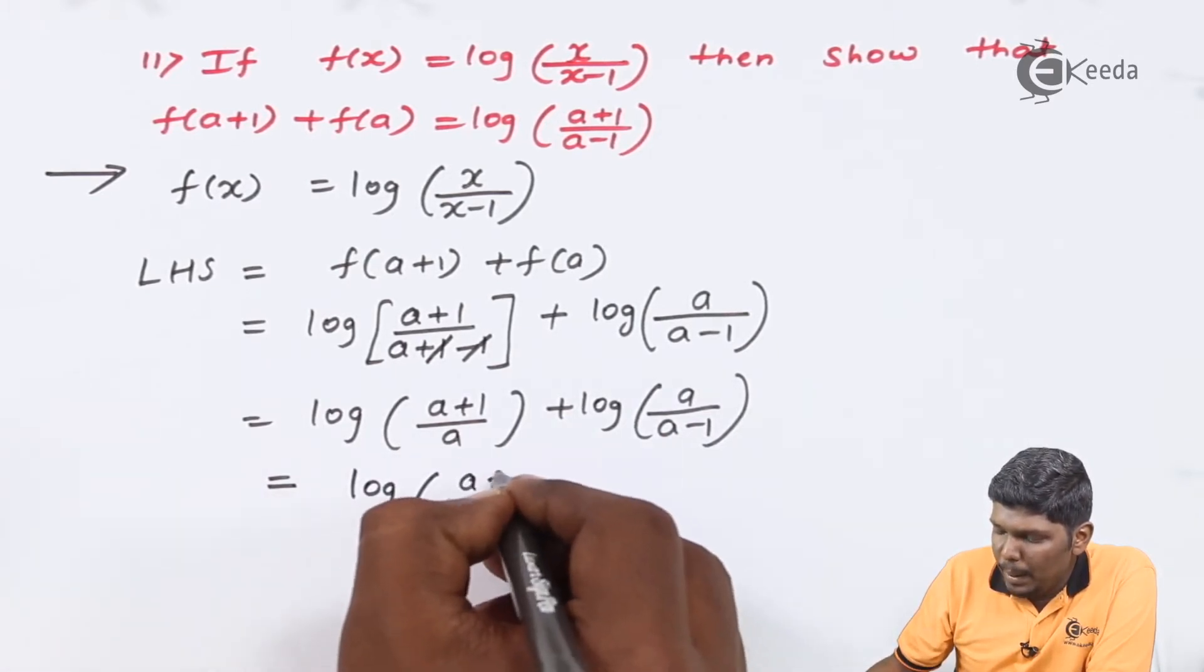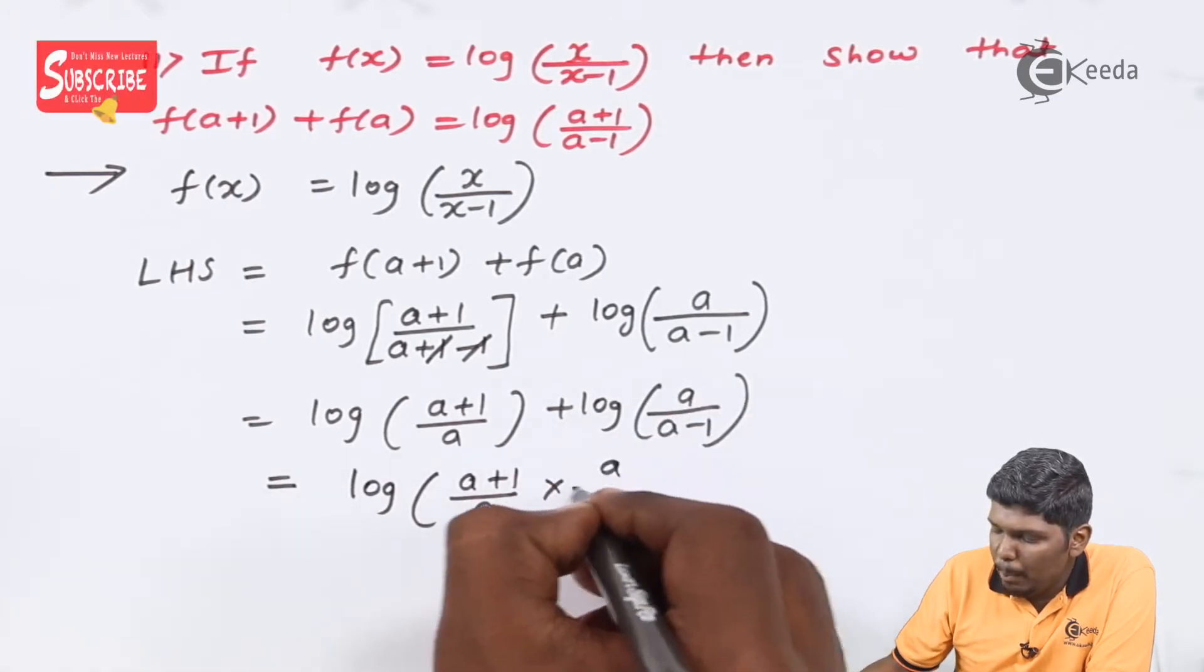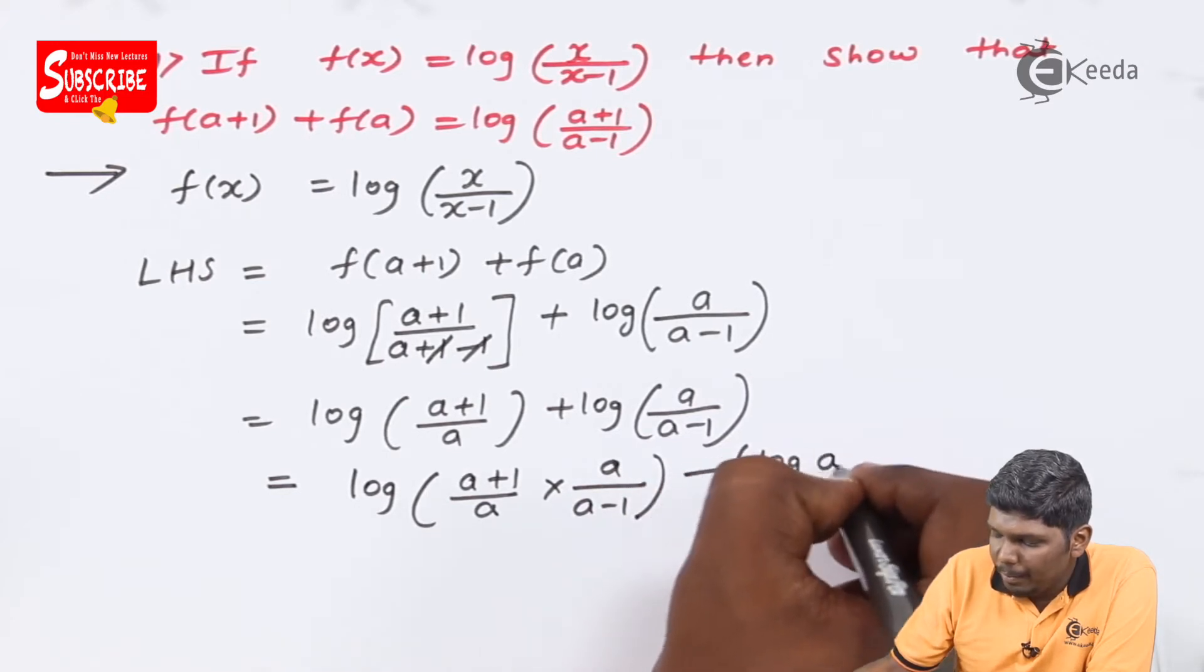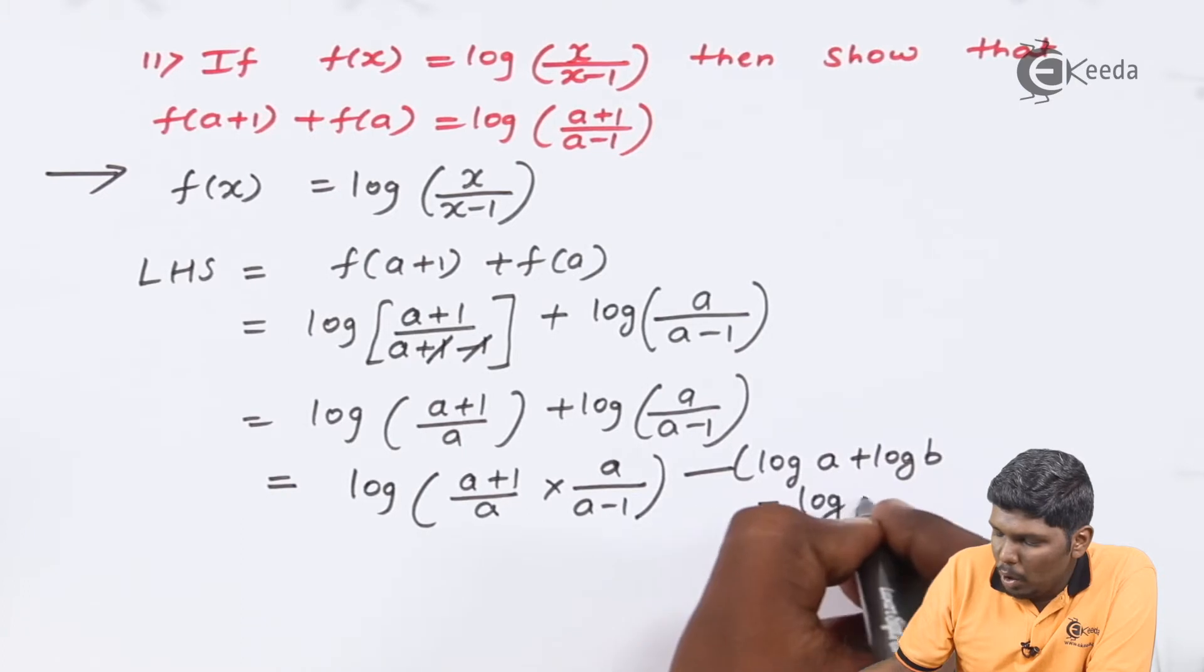That is (a+1)/a times a/(a-1). So, we use the property log a + log b equals log ab.